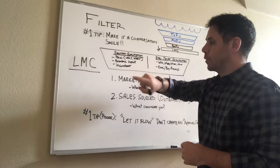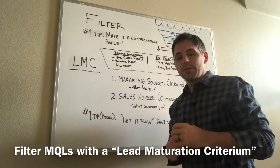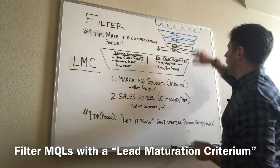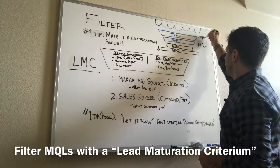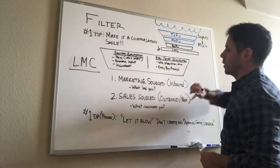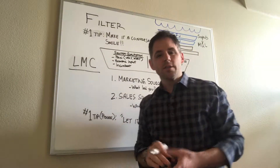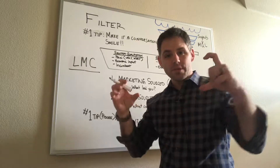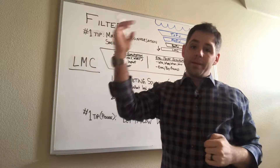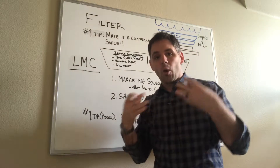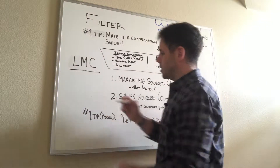This is called the filter stage. We're going to speak about developing a lead maturation criteria. We're going to attempt to take all these awesome MQLs — marketing qualified leads — that we developed from suspects up here, and go through a filter of sorts of qualification. This is kind of the quality assurance stage, where your business development teams are going to collect whether it's marketing source leads or sales sourced outbound leads, and qualify them into an agreed upon, a mutually agreed upon SQO.